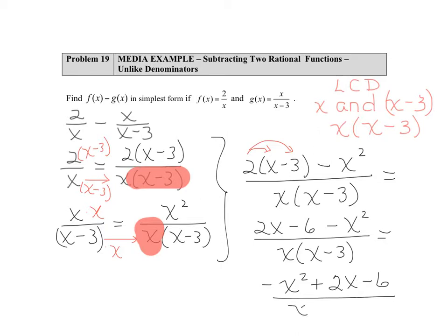And of course that denominator continues to get copied. We're going to take a look at whether there are multiples, since this is a trinomial, of negative 6, the number in the rear, that add or subtract to the positive 2, the number in the center, the b value.